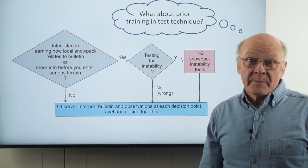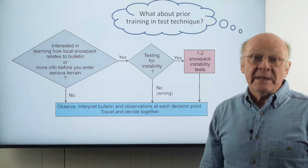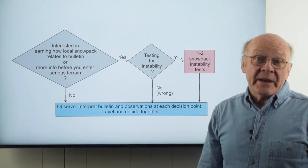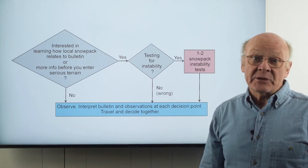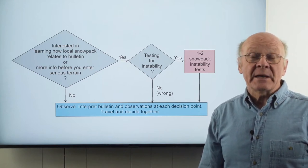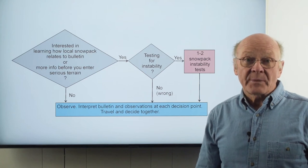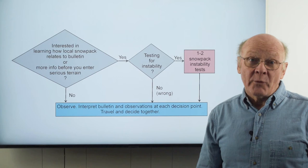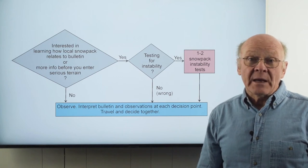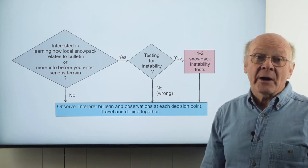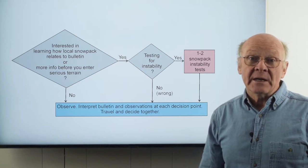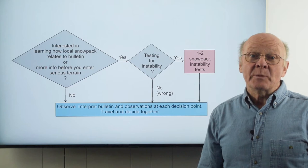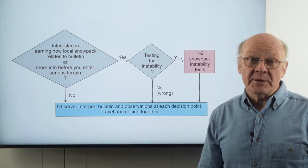What if you're not trained in how to do the ECT or other instability test? In the next few minutes, Doug is going to demonstrate the ECT and explain how to interpret it — that is a start on training. If you're strictly using instability tests to avoid more serious slopes, then errors in site selection or test technique are unlikely to increase the severity of the consequences. Every time you dig and test, you'll be learning about the snowpack and how it relates to the bulletin.